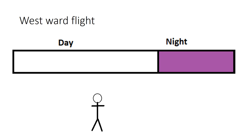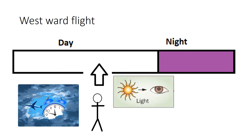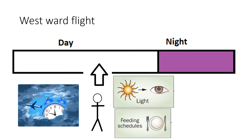For westward flight, when we fly towards the west, the day is prolonged. We reach the destination in the evening, but our internal clock has already set to night. To decrease the effects of jet lag, we should have light exposure, preferably outdoors, and eat dinner two to three hours before the ideal sleep time. Exposure to bright light will delay melatonin secretion, so after the prolonged day, we will get a good night's sleep.